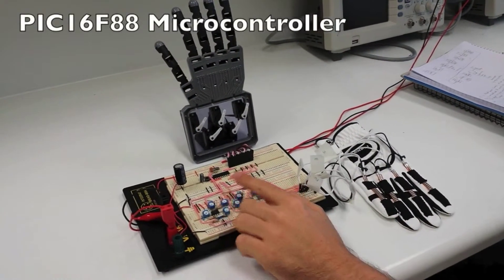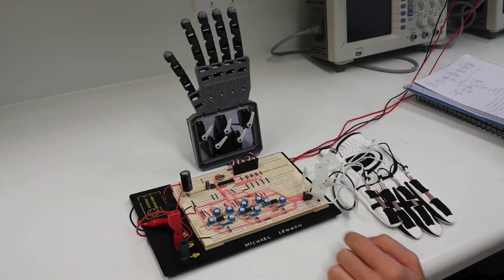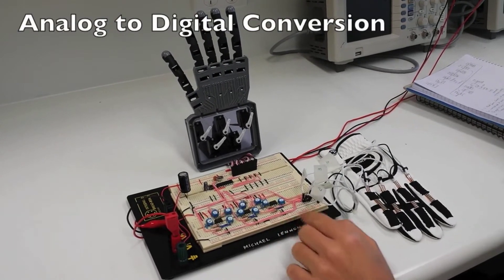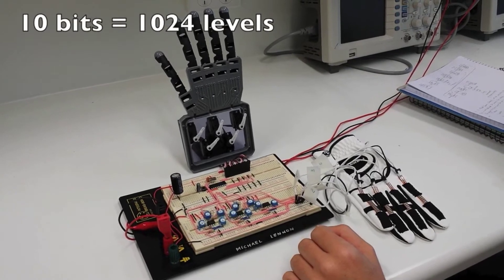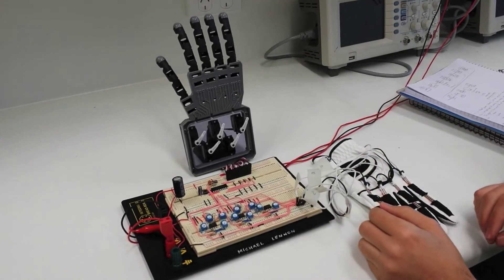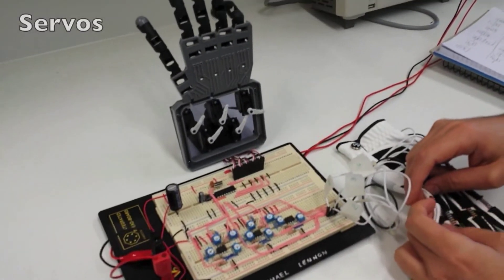The PIC chip receives the analog voltage signal for each finger from the signal conditioning circuit. Using analog to digital conversion, the voltage is converted to a 10-bit digital value that increases as the flex sensor is bent. The PIC chip then moves the servos attached to the fingers using a varying pulse width.